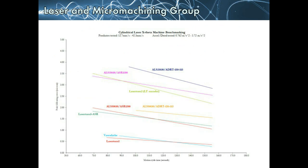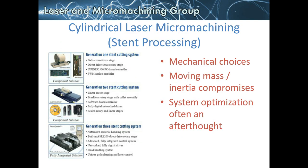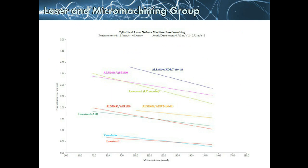Here we have an example of a collection of curves for different types of stent processing systems. The curves in dark blue, fuchsia pink, and light green at the top — particularly the ALS 25000 with ASR 1200 and the ALS 25030 with ADRT stage — are very similar to the generation 2 stent cutting systems. As we imagine what the generation 3 stent cutting system would look like with a fully integrated solution, this is the type of curve we might see toward the bottom — the pale blue vasculate line or the laser turn 1 line — where we have a system designed purpose-built with this application in mind.